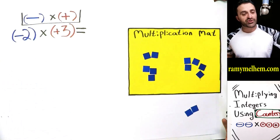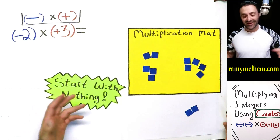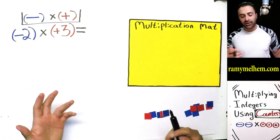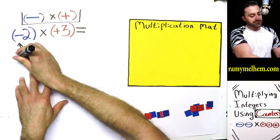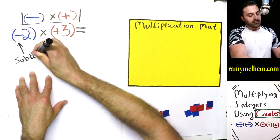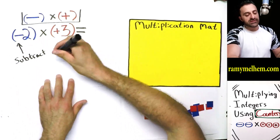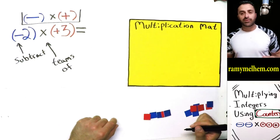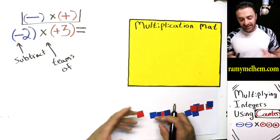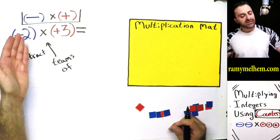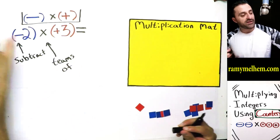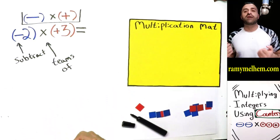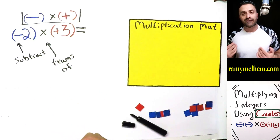Here's case number three — got to start with nothing, got to clear the court. Take a look at this question. How do we read it? I'm going to write 'subtract.' Subtract two teams of positive three — the positive three implies the red team, three red players. Subtracting two teams of positive three off the basketball court that starts with nothing. Well, I've got a problem now because I can't go into the court and pull players off — there's nobody to pull off. So what do I do?